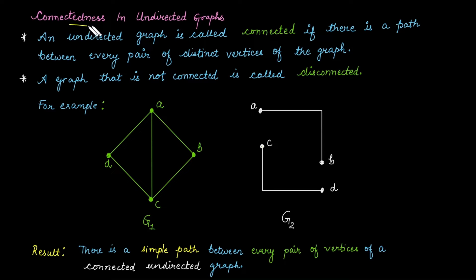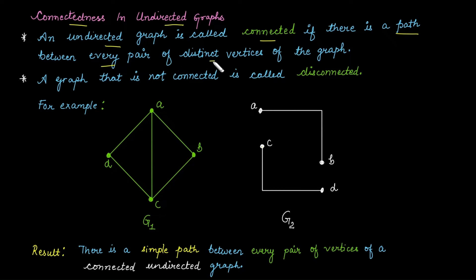Next is connectedness in an undirected graph. An undirected graph is called connected if there is a path between every pair of distinct vertices of the graph. Otherwise, the graph is called disconnected.